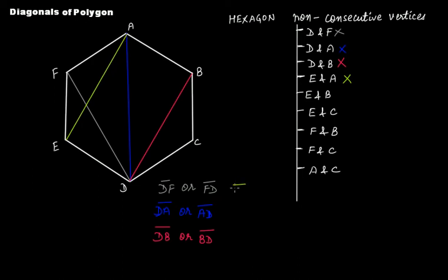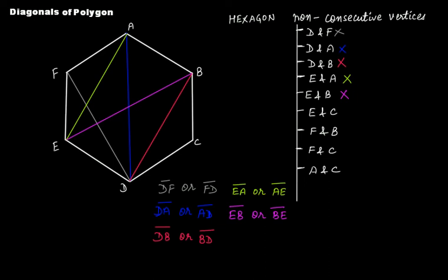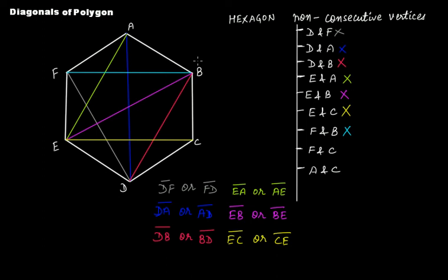Then comes e and b — line segment eb is another diagonal. Then e and c — line segment ec is another diagonal. Then f and b — line segment fb is another diagonal.